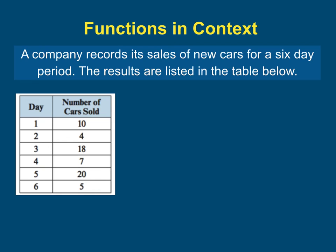So it looks like on day 1, 10 cars were sold. On day 2, 4 cars were sold. Day 3, 18 cars, etc.